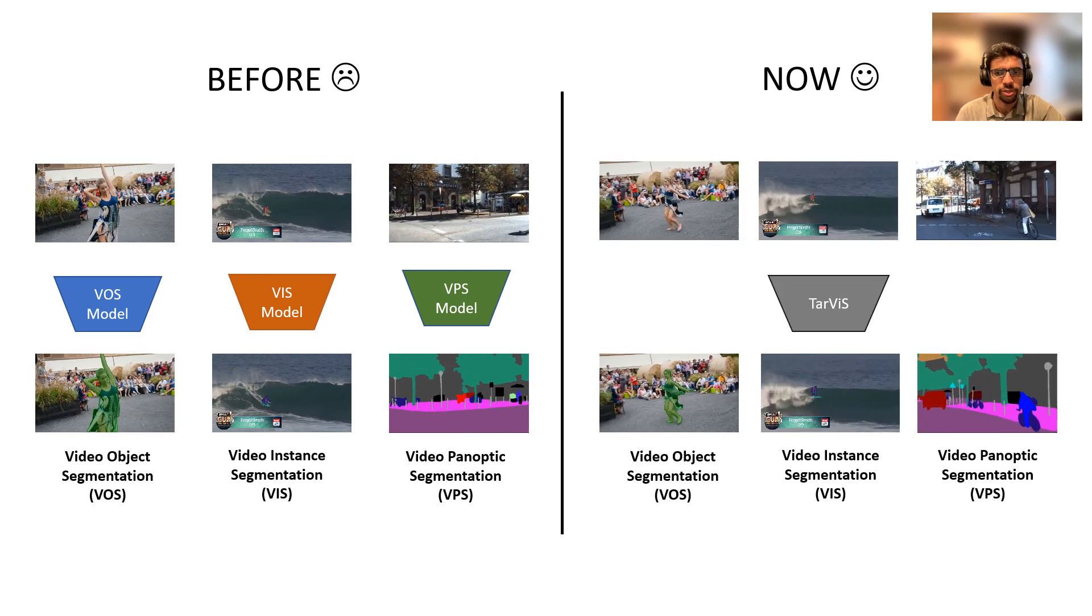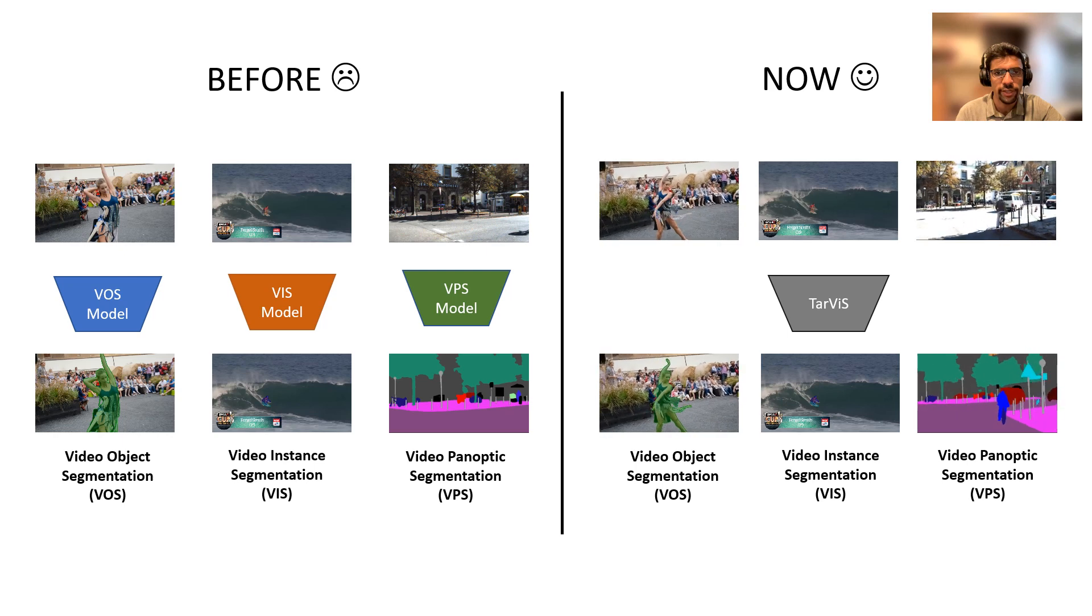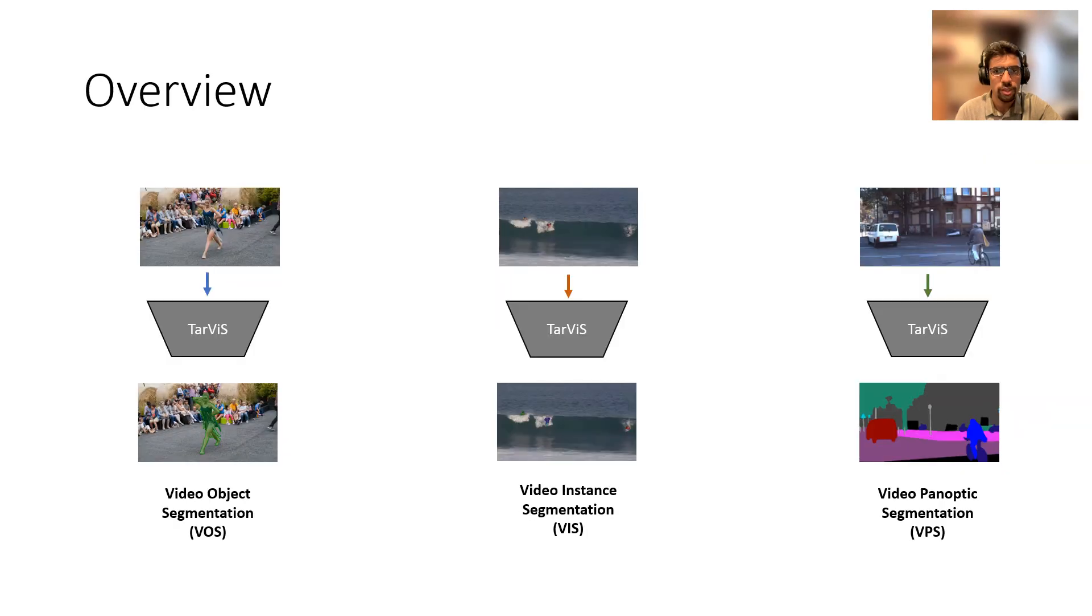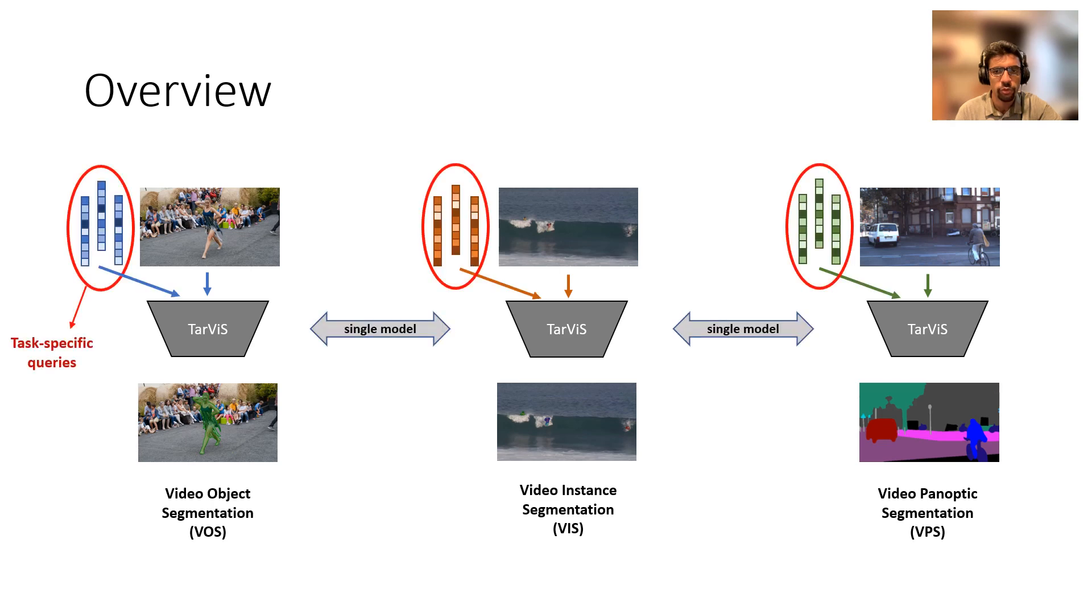Tarvis, on the other hand, is able to tackle all these tasks with a unified network. To do this, we employ a novel transformer-based architecture which encodes the task as a set of queries.